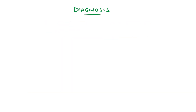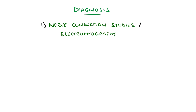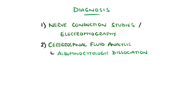As part of the diagnosis, nerve conduction studies and electromyography are performed to confirm the presence of a peripheral neuropathy. Analysis of the cerebrospinal fluid is also valuable, the classic finding being an elevated protein level with a normal cell count, called albuminocytological dissociation. This can take time to develop, and 1 in 10 cases never develop this finding. CSF analysis is also important in ruling out other infectious causes.